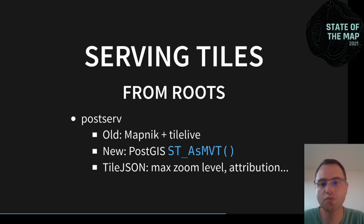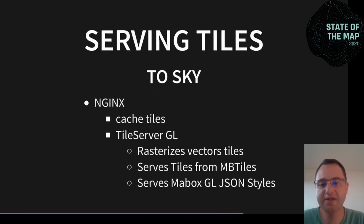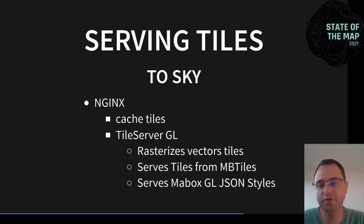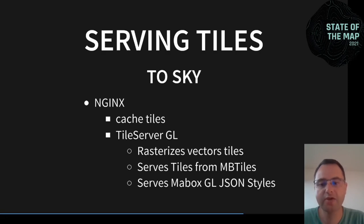So we have tiles and metadata, and we need to bring them to the web. For this we use NGINX, which fetches tiles from PostServe and also caches them. Alongside NGINX, we have TileServerGL, which can fetch vector tiles from PostServe and rasterize them to PNG, serving raster tiles for clients like Leaflet that don't support vector tiles. TileServerGL is also able to serve MBTiles — for example, for hillshading — and serves static files for MapBox GL styles.